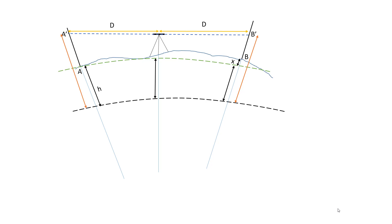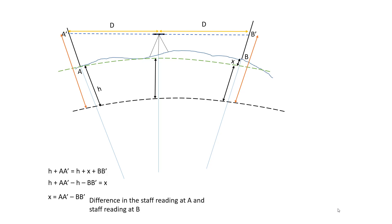Again, using simple mathematics and performing the relevant operations, we can see that x is equal to the difference in the staff readings at points A and B. The most important part here is to consider the curvature of the arc and keep our instrument equidistant from the points at which we are taking measurements. Thank you.